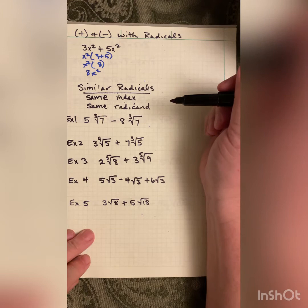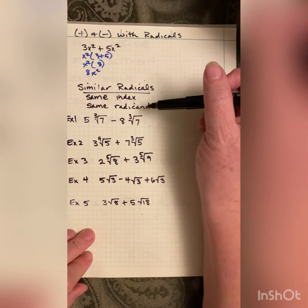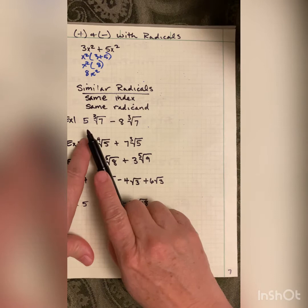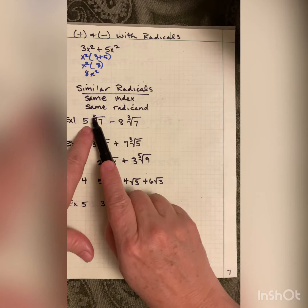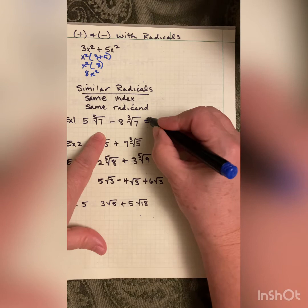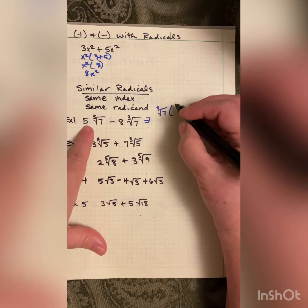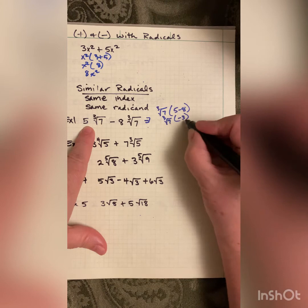This exact same process works with radicals — we can add and subtract similar radicals. Similar radicals have the same index and the same radicand. For example, 5∛7 minus 8∛7: these are similar radicals. Doing it the long way, factor out ∛7 and you're left with (5 − 8)∛7 = −3∛7. Standard form puts the coefficient up front: negative 3 cube root of 7.